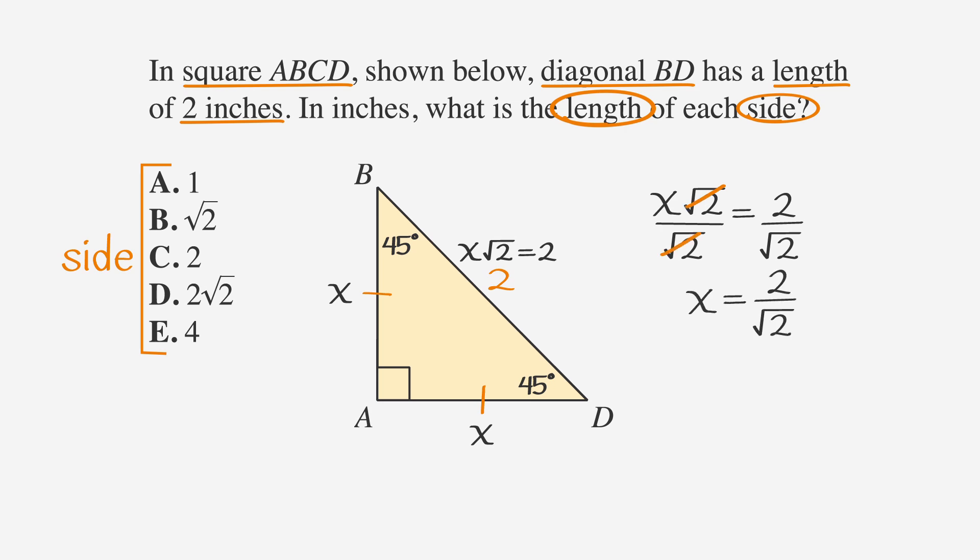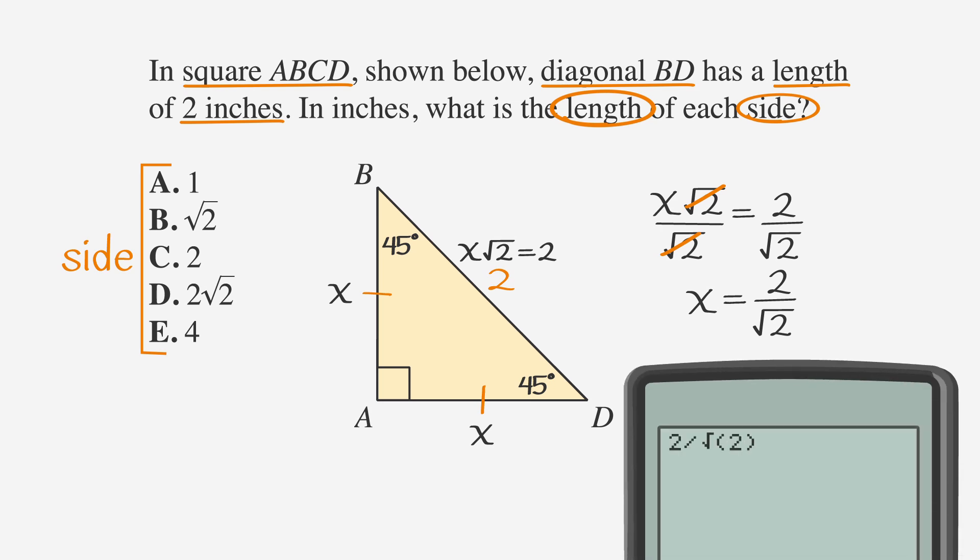We could rationalize this fraction, but it's more error-free to get a numerical value using our calculator and match it with the answer choices. Using our calculator, we divide 2 by the square root of 2 and find that x equals about 1.414. Let's write that in.